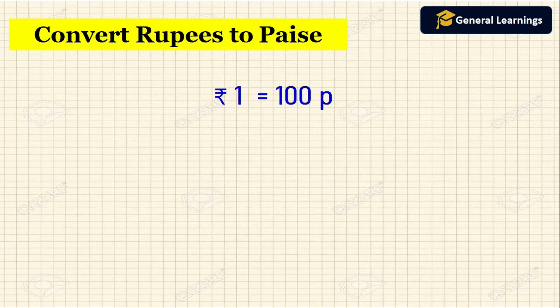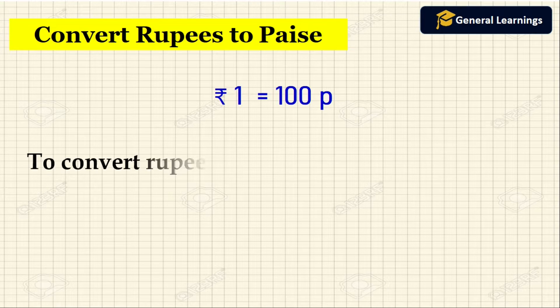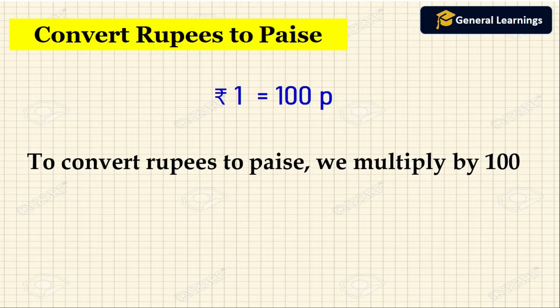We all know that 1 rupee is equal to 100 paise, which means 100 paise makes 1 rupee. To convert rupees to paise, we should multiply by 100.